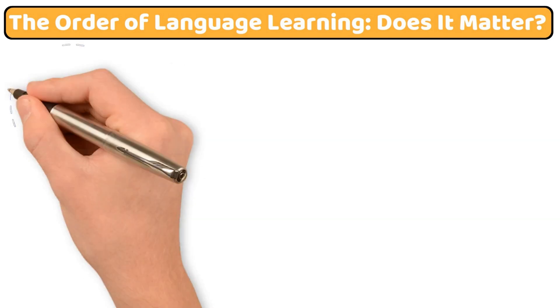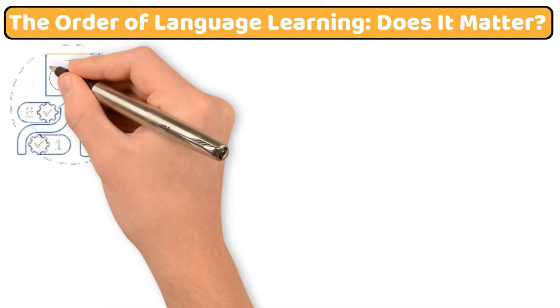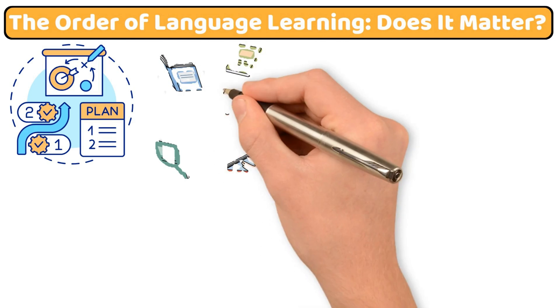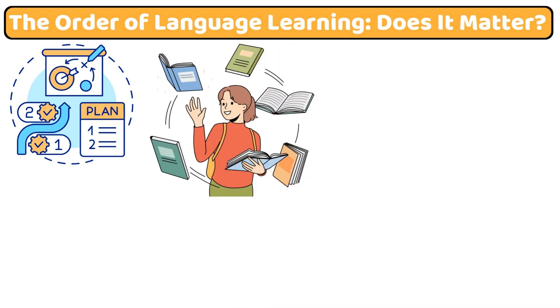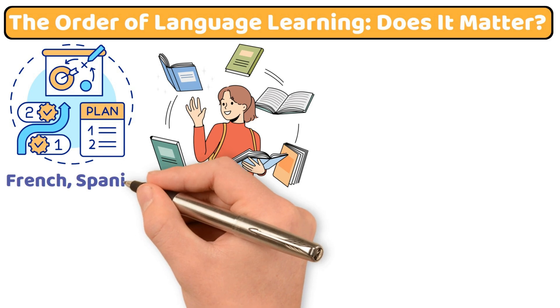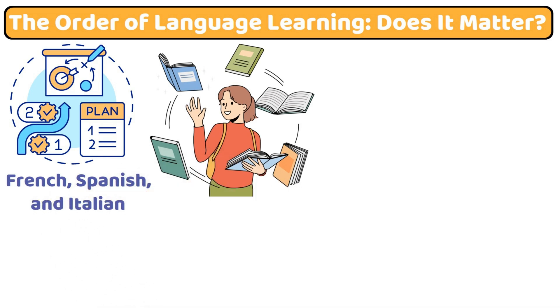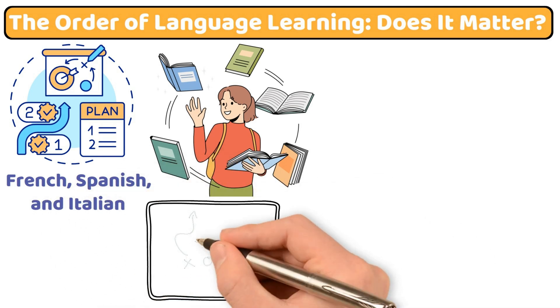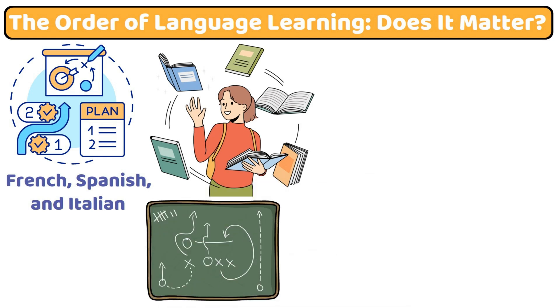The order of language learning: does it matter? The order in which you learn languages can influence the learning process. Many learners find that studying related languages in succession, such as French, Spanish and Italian, creates a smoother transition, as these languages share similar grammatical structures and vocabulary.